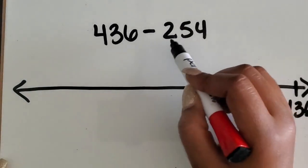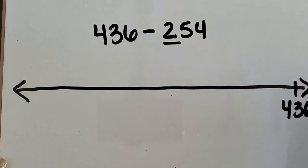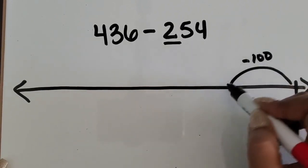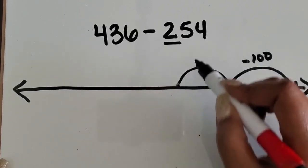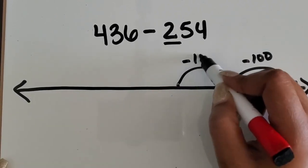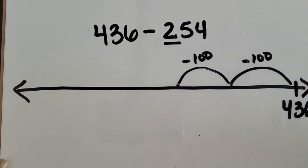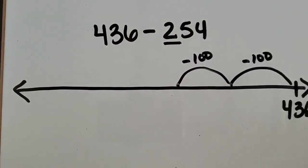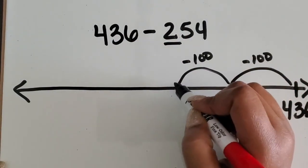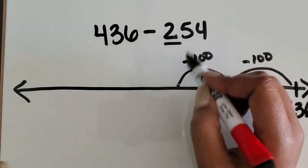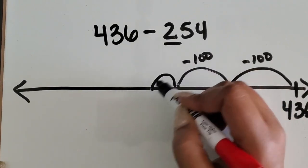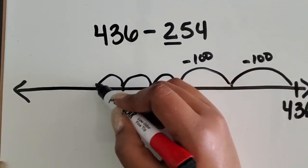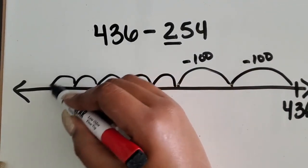I'm going to subtract two hundreds first — one hundred, another hundred, that makes two hundred. Then I'm going to subtract five tens: ten, twenty, thirty, forty, fifty.